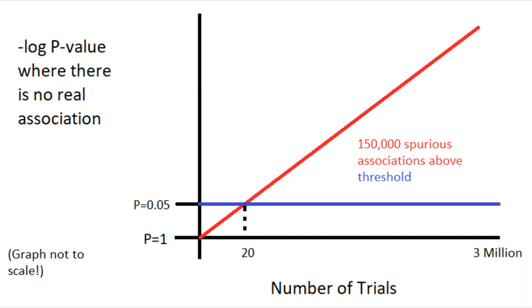If every known independent common variant is tested for association, there would be more than 3 million tests carried out per GWAS. A p-value threshold of p ≤ 0.05 would therefore result in more than 150,000 spurious associations being deemed statistically significant.